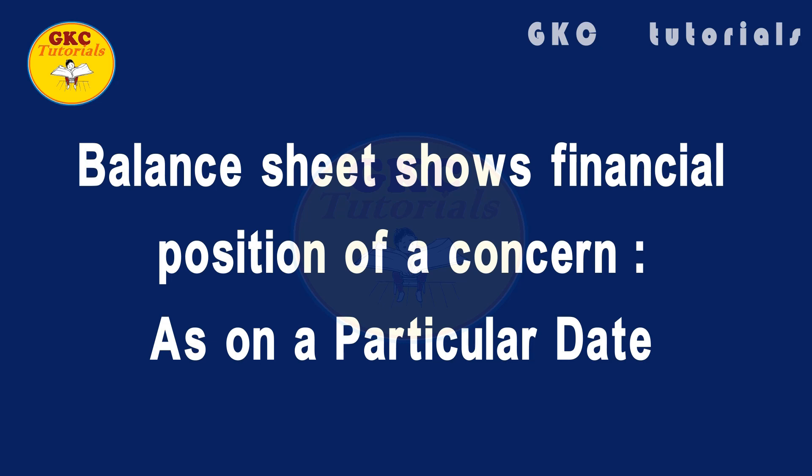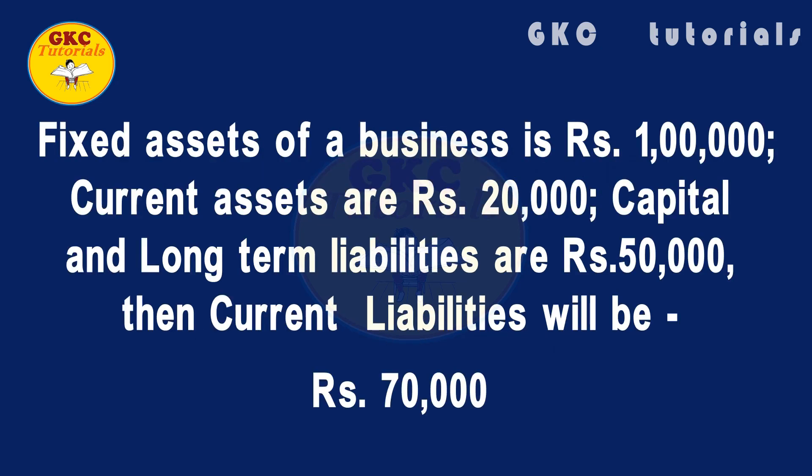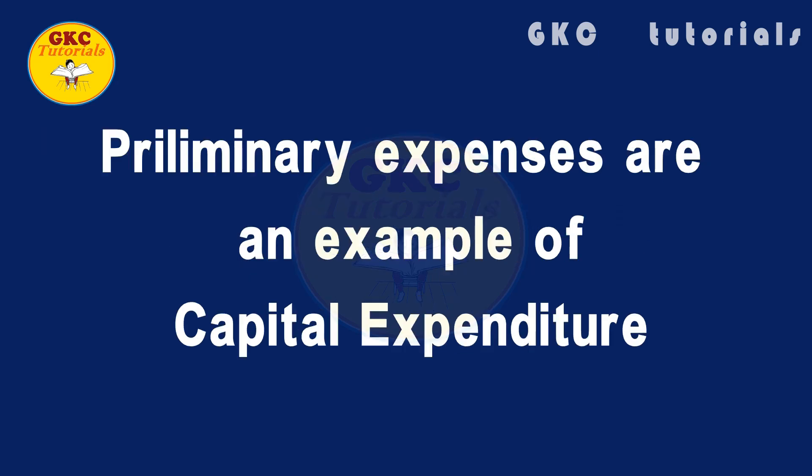Next question: fixed assets of a business are rupees 1 lakh, current assets are rupees 20,000, capital and long-term liabilities are rupees 50,000 — then current liabilities will be rupees 70,000.